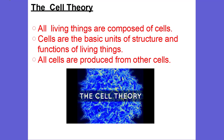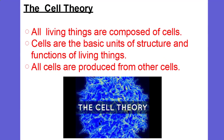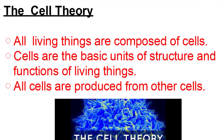We're going to start with the cell theory. The cell theory is something that we can observe, something that we can experiment, and something that we know about cells. It has three postulates: one is that all living things are composed of cells; that cells are the basic units of structure and function of living things; and that all cells are produced from other cells.